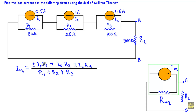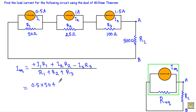The sign convention: when current source I1 supplies current from left to right, we consider it positive; if from right to left, we consider it negative. Here I1 and I2 are supplying current from left to right — both positive. But I3 is supplying from right to left — so it is negative. Therefore: I_equivalent = (positive I1·R1 + positive I2·R2 − I3·R3) / (R1 + R2 + R3). Our I1 is 0.5, R1 is 50; plus 1 times 25; minus 1.5 times 100...